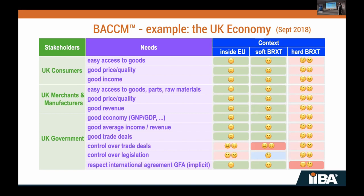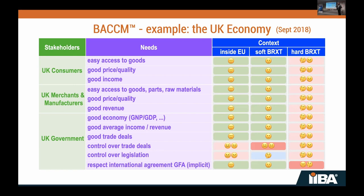The only difference post-Brexit was that the smiley on trade deals and legislation improved for government — but not for people and merchants. The UK had control over trade deals but lacked leverage. When negotiating with India with close to a billion people, a market of 60 million carries much less weight than the EU's 500 million. They controlled their own side, but not the other party. The EU had better leverage on the other side. This is business analysis — not IT, but real business analysis.